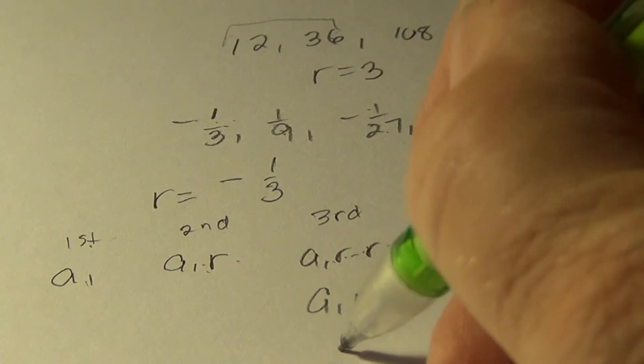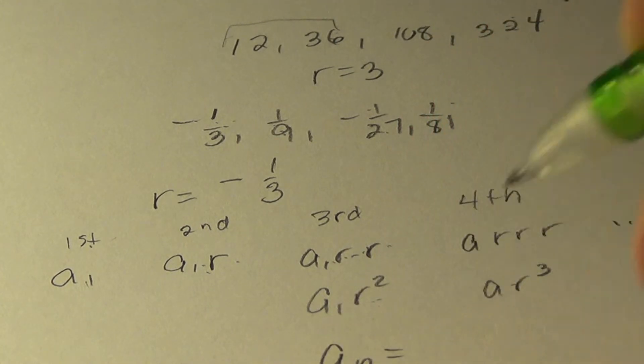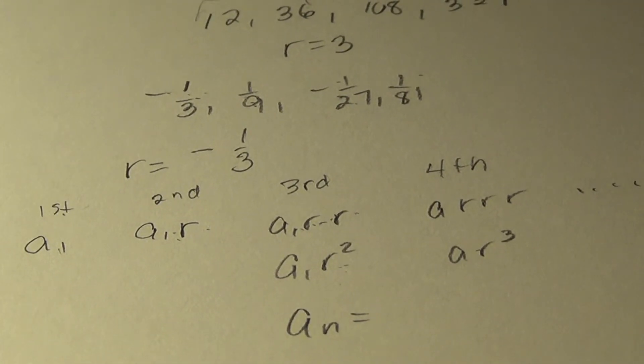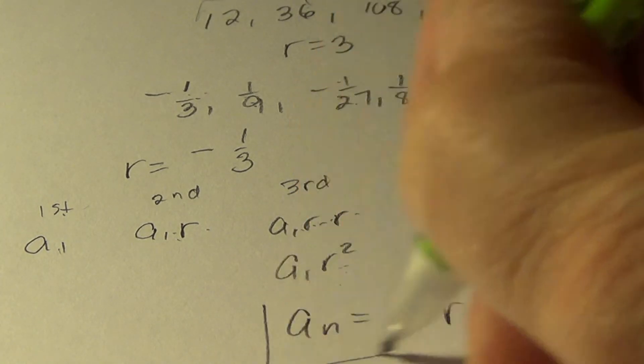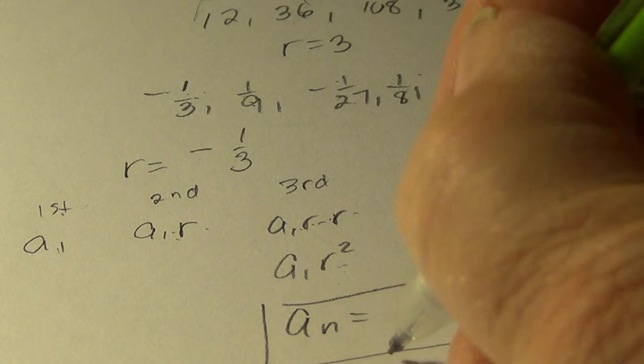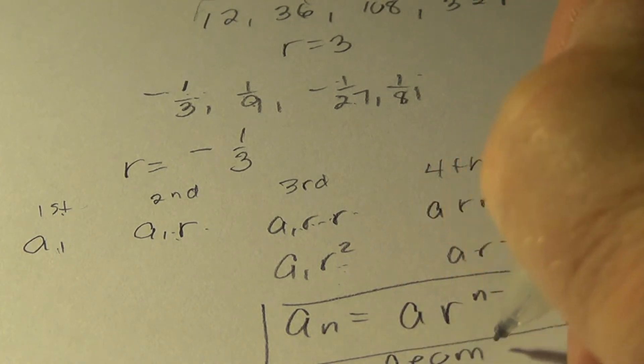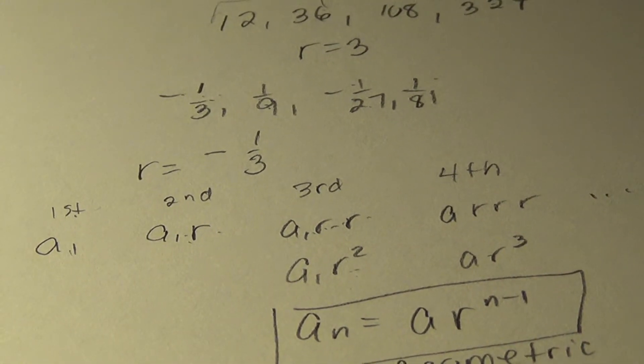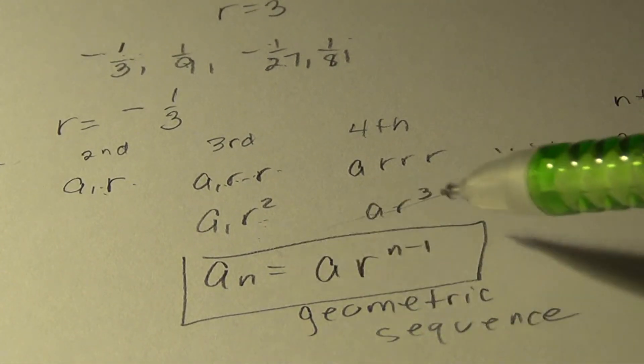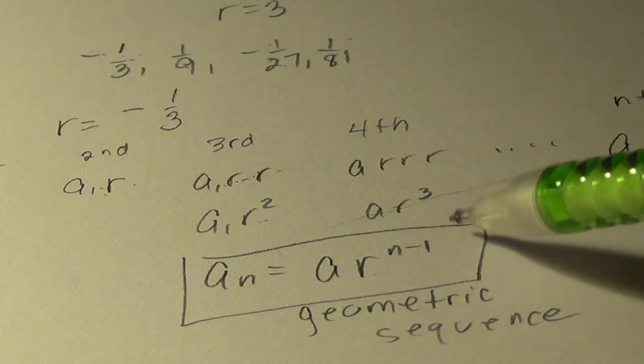So we can put that together. The nth term of a geometric sequence is A R to the n minus one. So make sure that you have that. That's geometric sequence. The nth term of any geometric sequence is A times R to the n minus one.